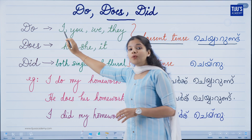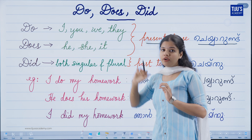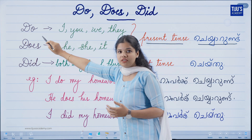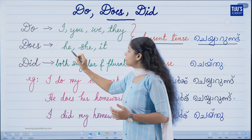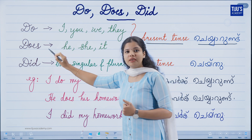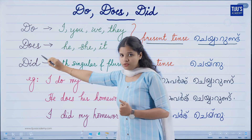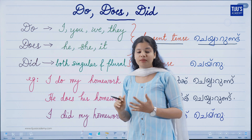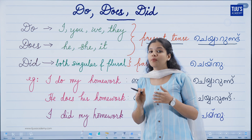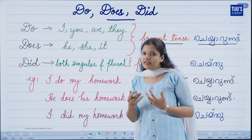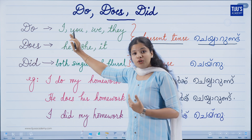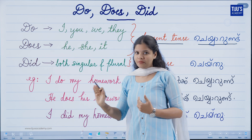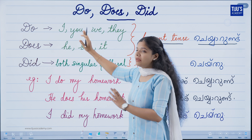Do — we use with a plural noun. We use do with the plural noun. We use does with the singular noun. We don't say 'I does' — it doesn't work that way. That is the basic difference.